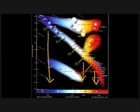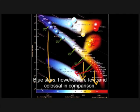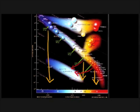A majority of stars are red and eventually become white dwarves. It's the same with yellow. Blue stars, however, are few and colossal in comparison.